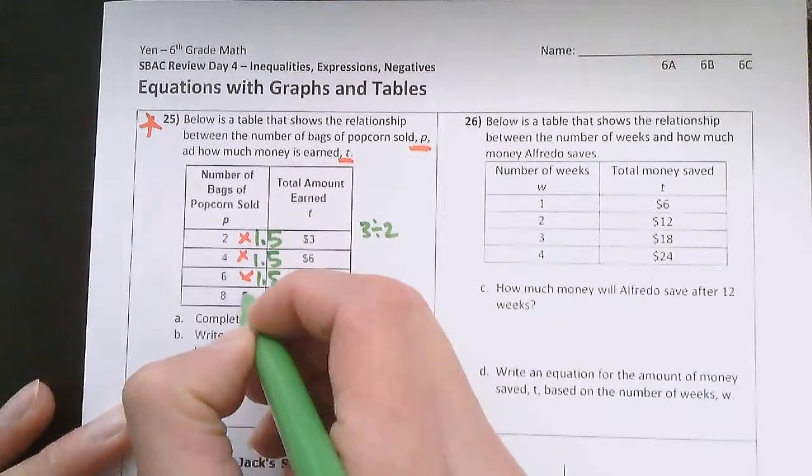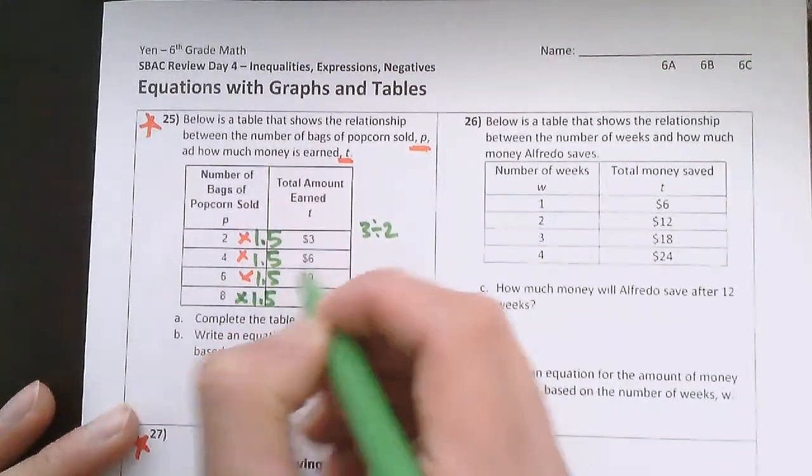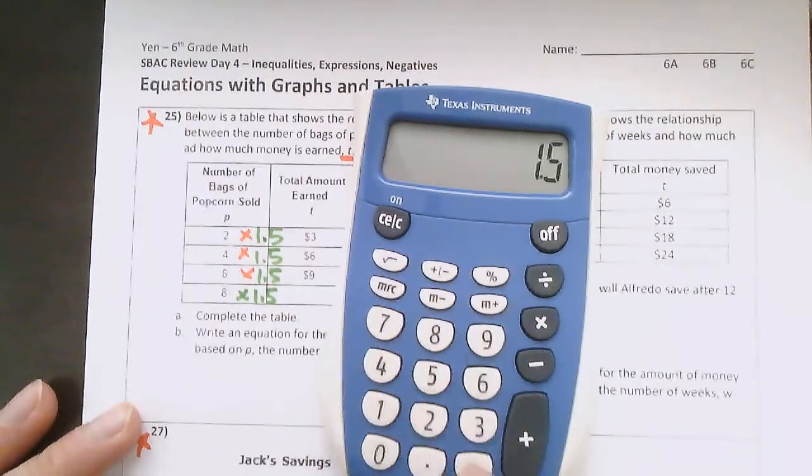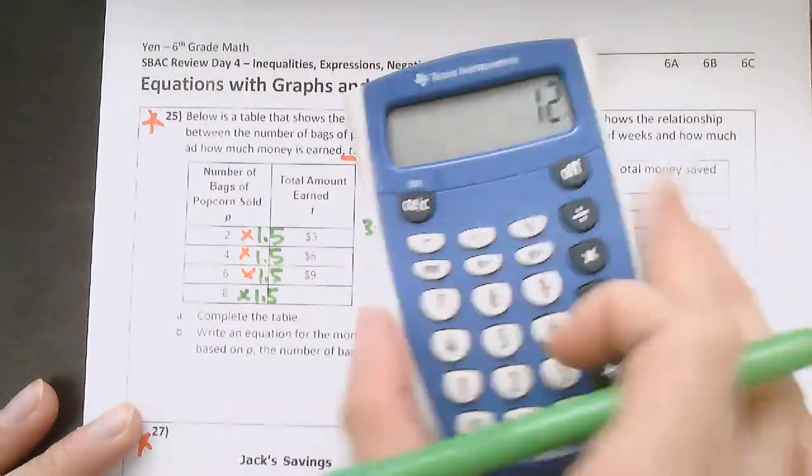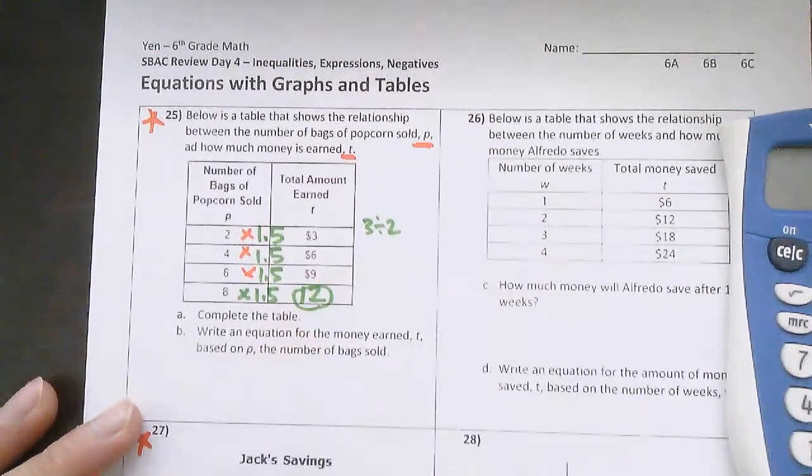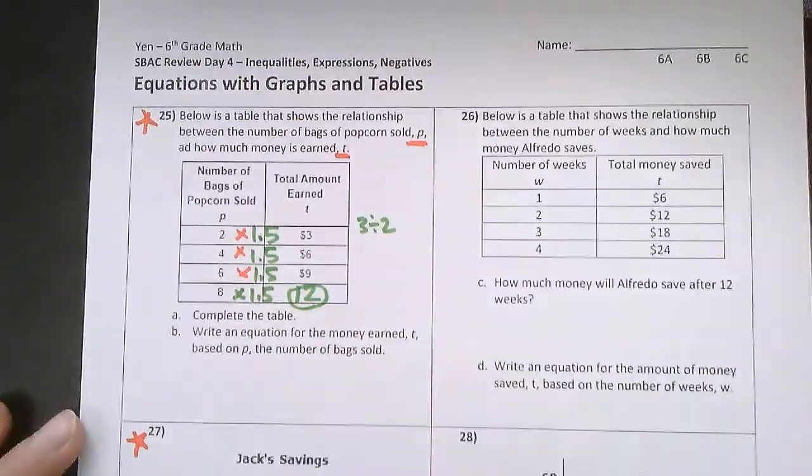So that means 8 times 1.5 is 12. So $12 is how much I earn if I sell 8 bags.